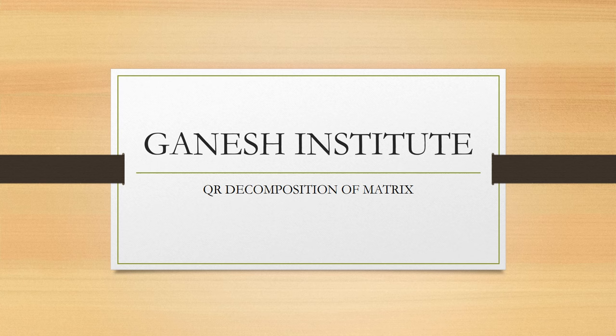In this video, we are taking up another section from linear algebra, which is QR decomposition of a matrix. I am hoping that you have already watched LR decomposition of a matrix, as it is slightly different from what we discussed in our previous videos. Here, a matrix will be given to you and you have to split it into two parts: Q and R. What is the Q matrix, what is R, and how you can decompose or factorize it — this is what we are going to study. Stay tuned. Let's see with the help of an example.